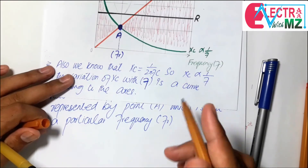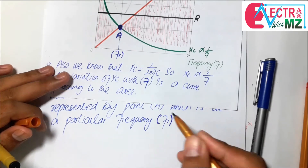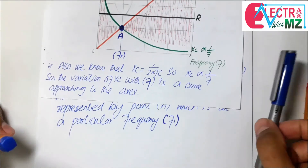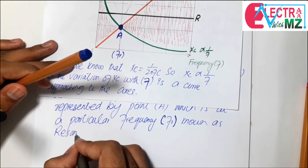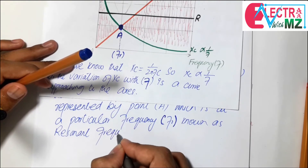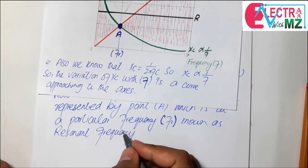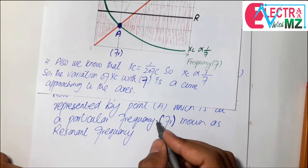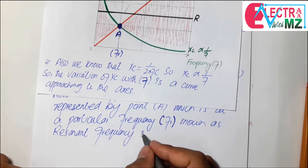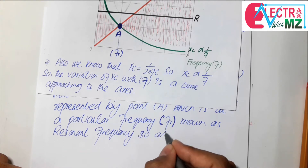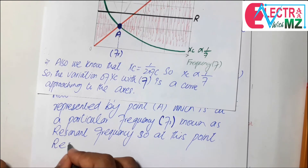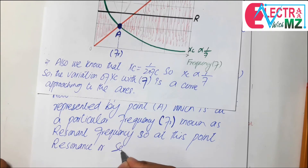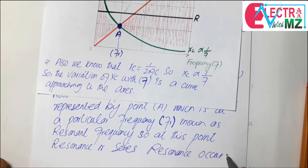Point A is at the particular frequency fr, known as the resonant frequency. At this point, series resonance occurs.